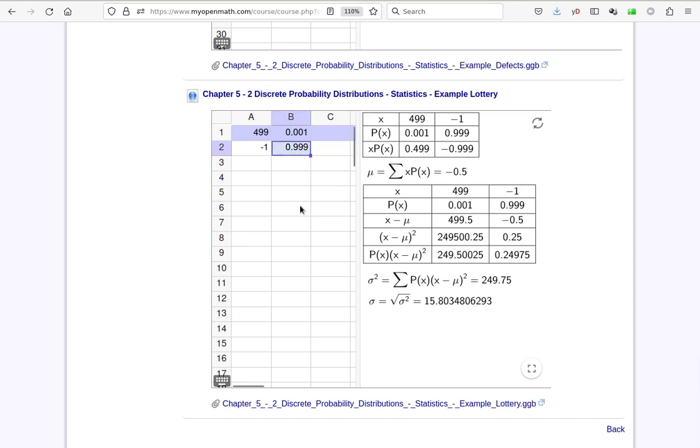So the other 999 times, that is a probability of 0.999, the person who plays is out $1. That means they've lost $1.